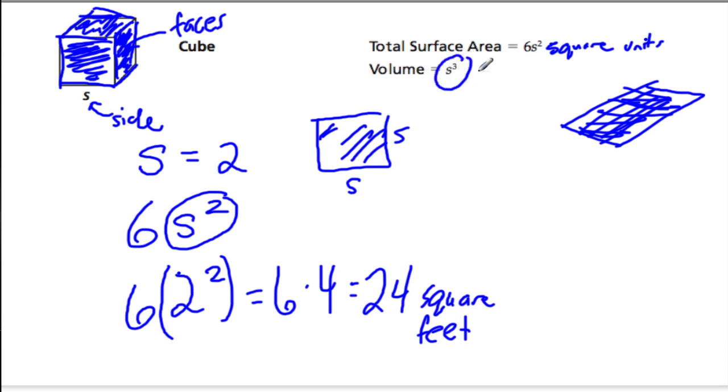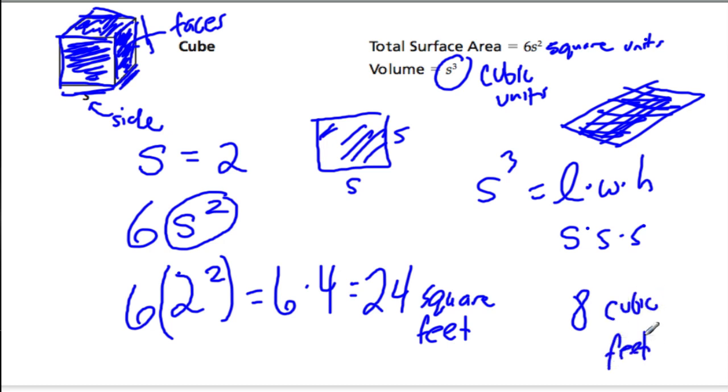Now, volume is in cubic units. So when you're finding the volume, you're finding out how much could I fill in this cube and you're actually finding out how many cubes would fit in it. So it's S to the third power because you're multiplying length times width times height. But remember, the length is a side, the width is also a side and the height is a side. So it's really just a side times a side times a side. And that in this case is 2 times 2 times 2 which is 8 cubic feet.